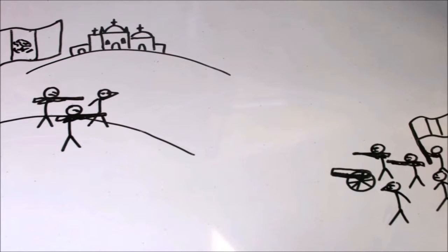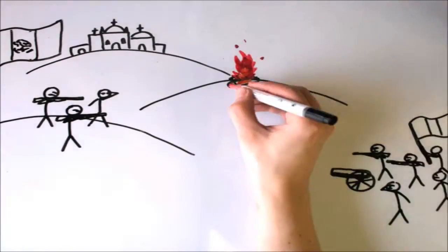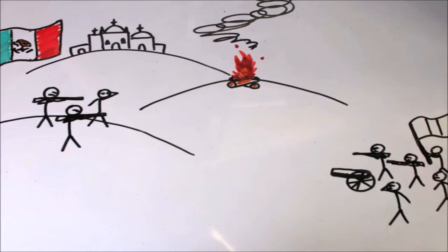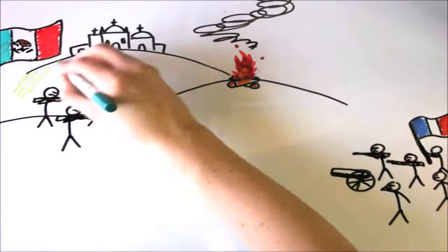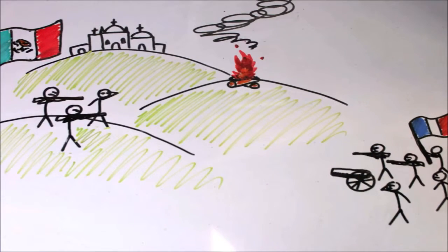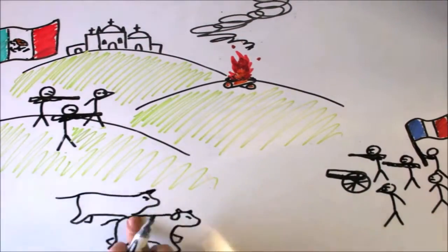They improvised to compensate for their inferior equipment. They lit fires to signal for reinforcements. They gained high ground advantage. They rallied against the state-of-the-art French artillery, and they stampeded cattle to break French battle formations.